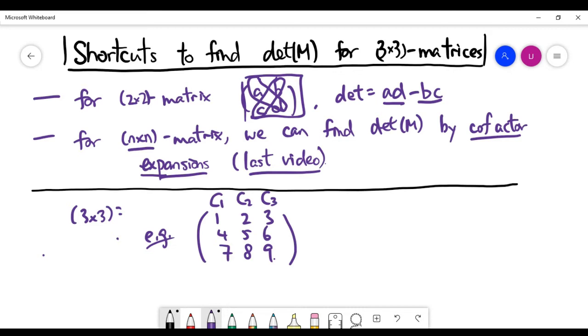We can call the three columns C1 to C3 respectively. And the shortcut is that you have to write again column 1 on the right-hand side here. And similarly, for the second column, you have to write it down again on the right-hand side here.